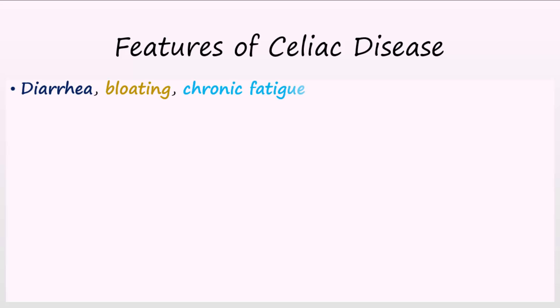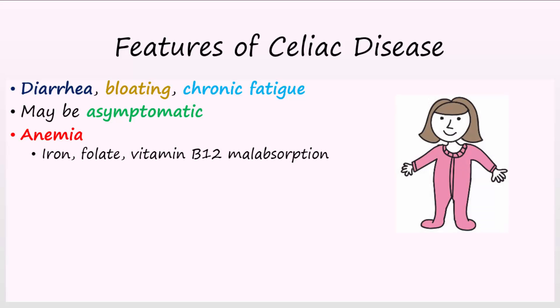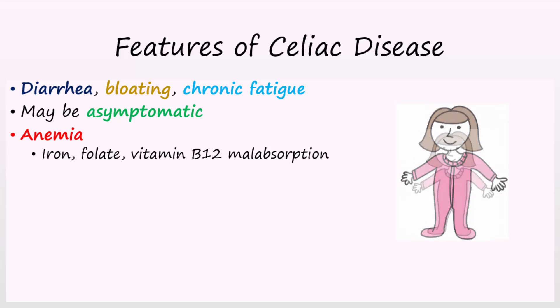Damage to the enterocytes often leads to clinical features such as diarrhea, bloating, and chronic fatigue. Celiac patients may also present with anemia due to lack of iron, folate, or vitamin B12 absorption. In children with celiac disease, this may lead to delayed puberty or short stature.